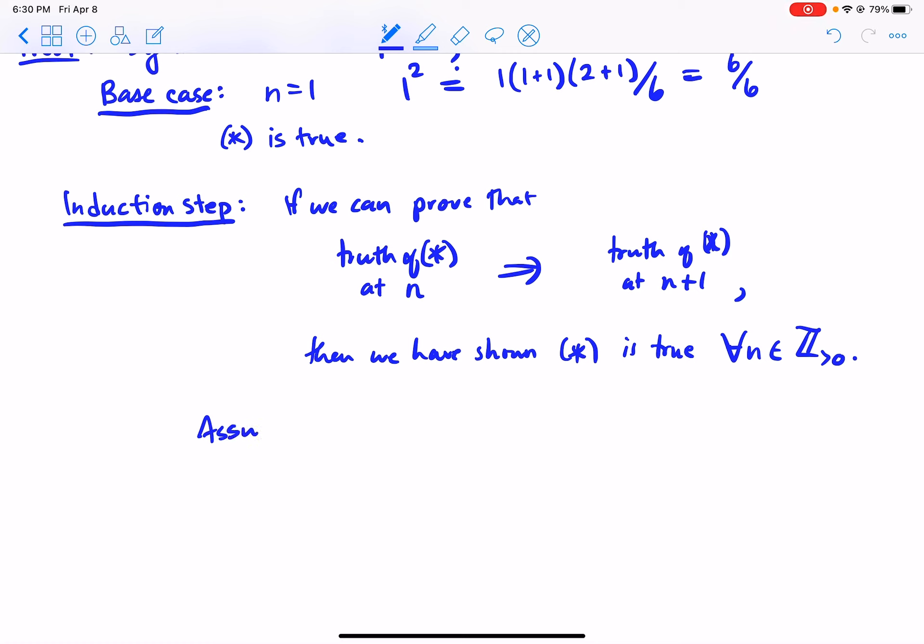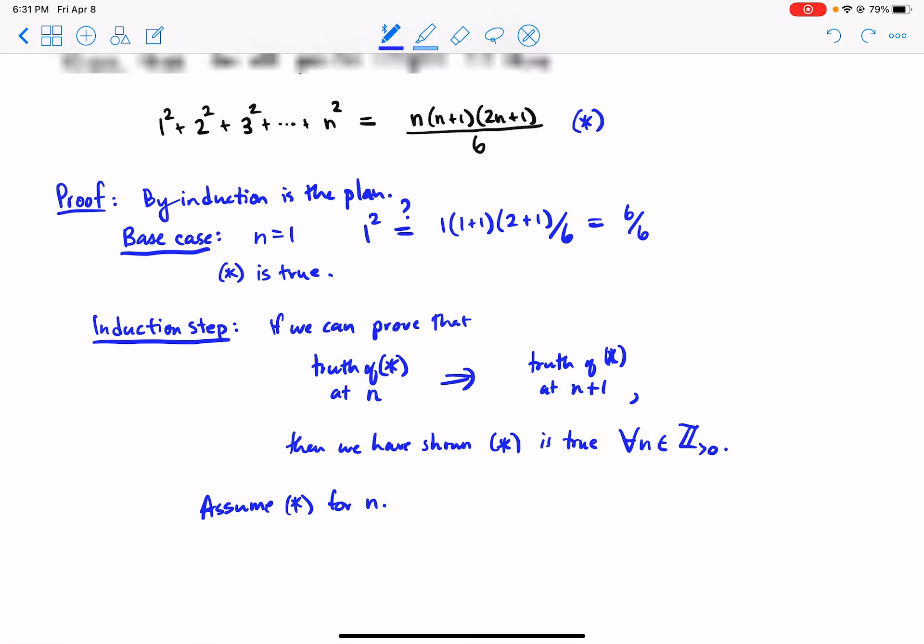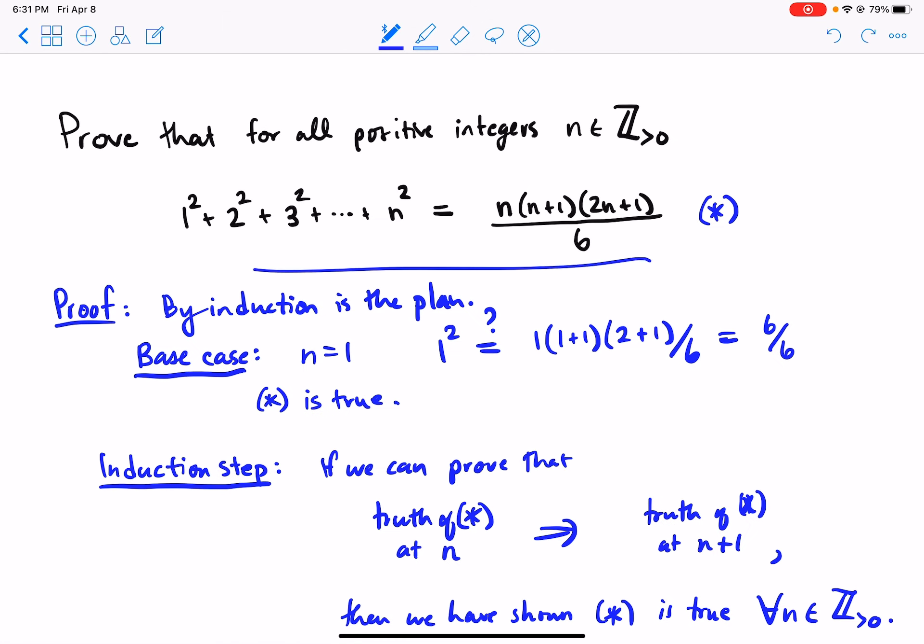So assume star for n. Okay, now we need to show star is true at n plus 1. So then what are we trying to prove? We're trying to prove that this holds when I replace n with n plus 1.